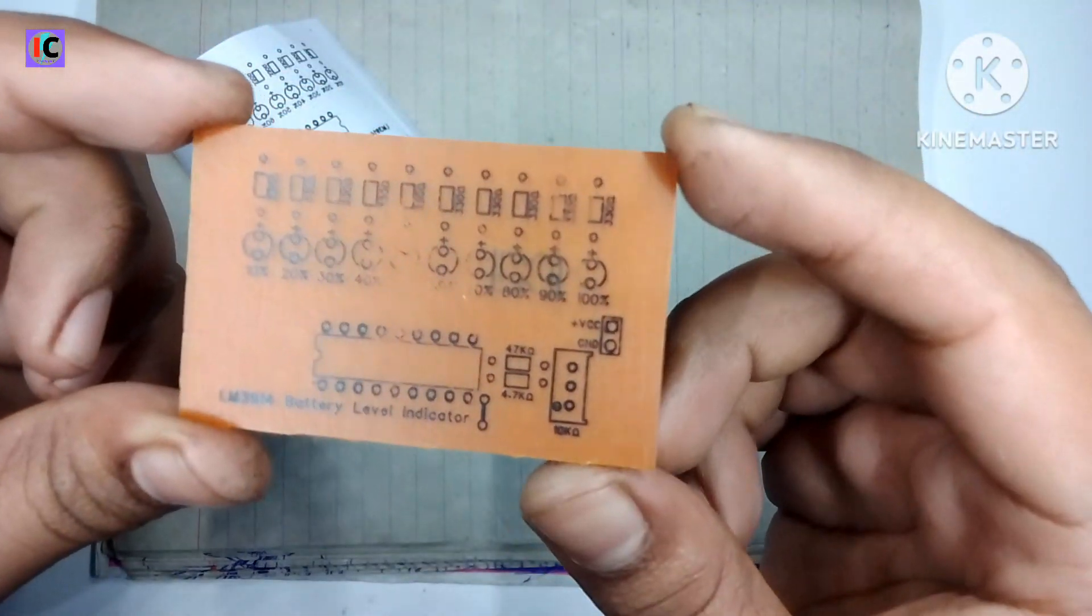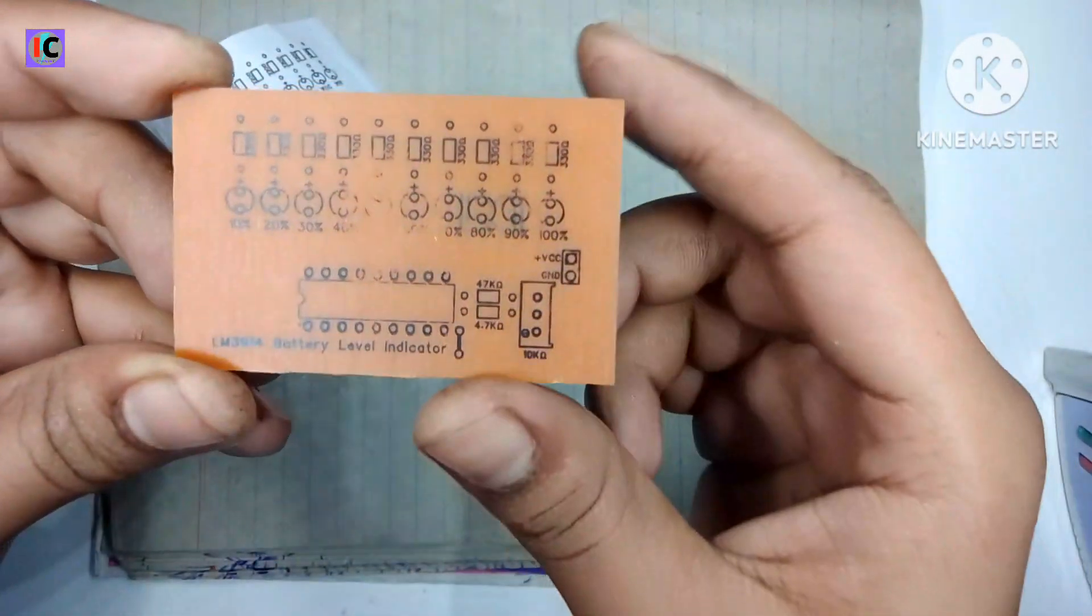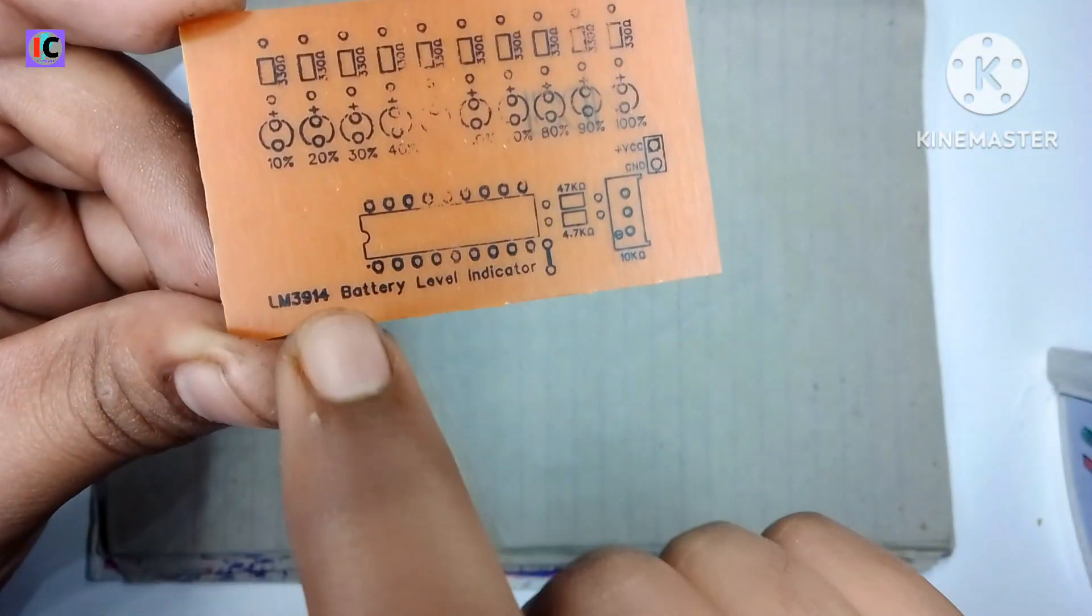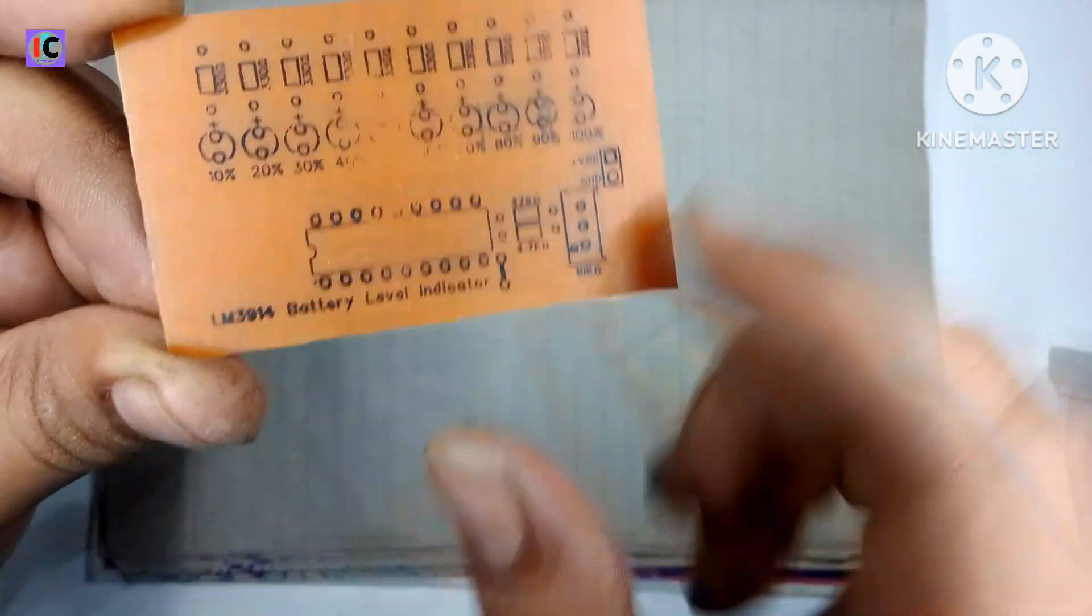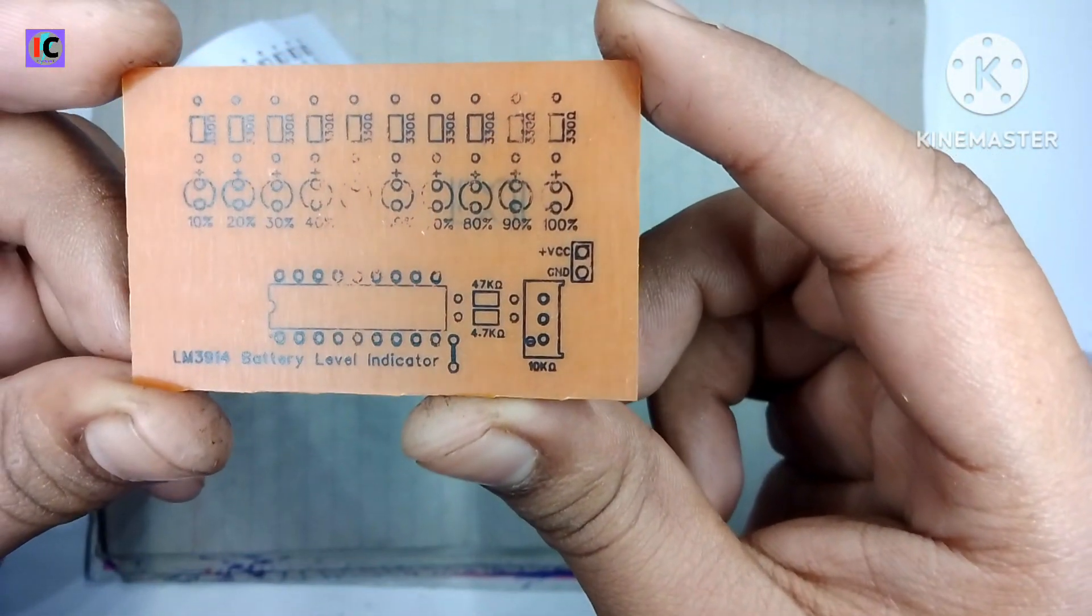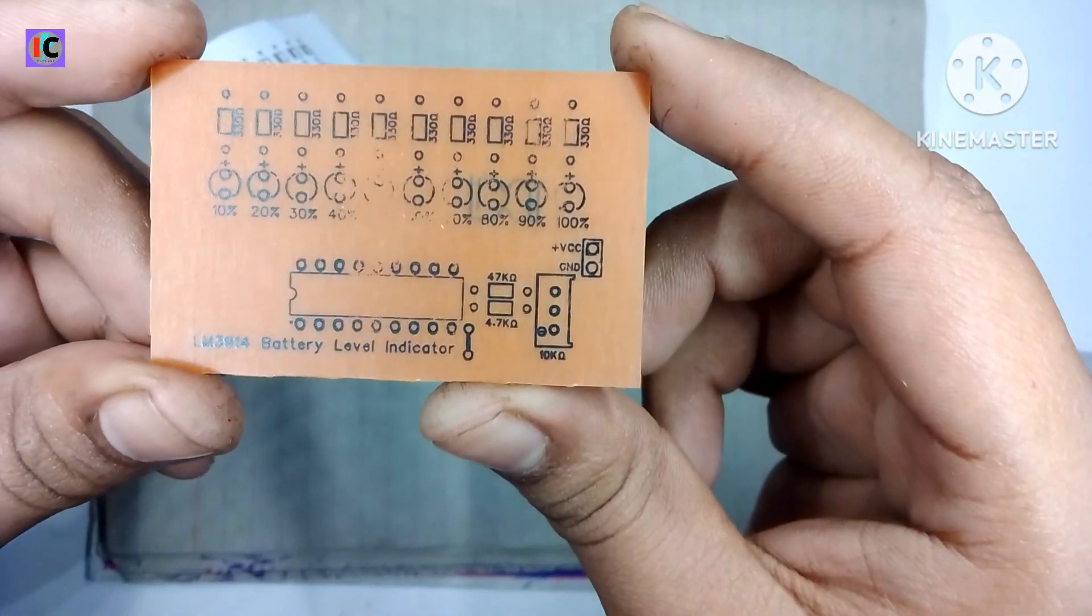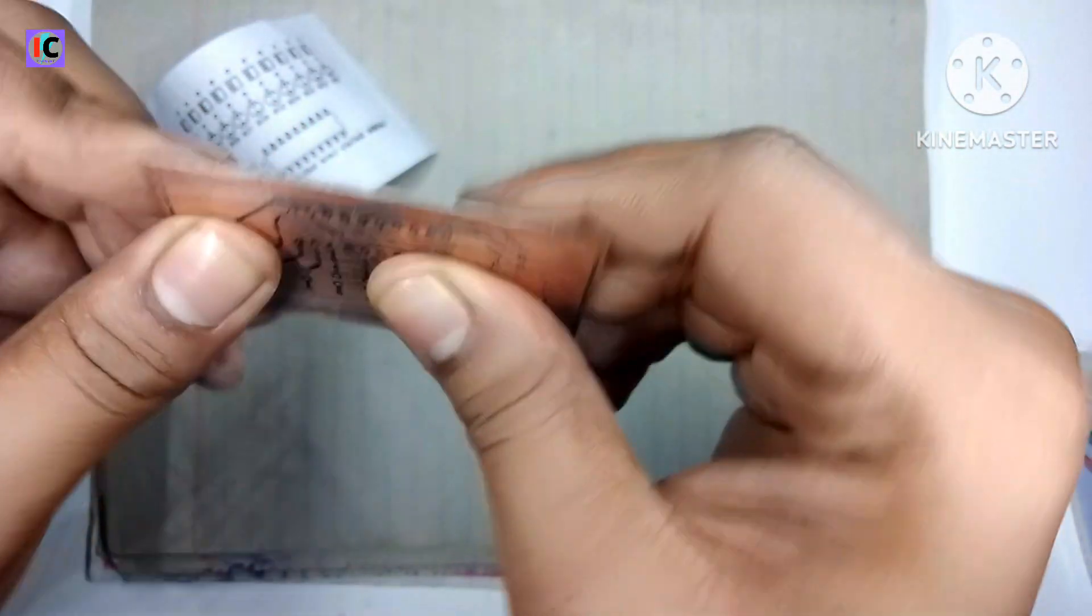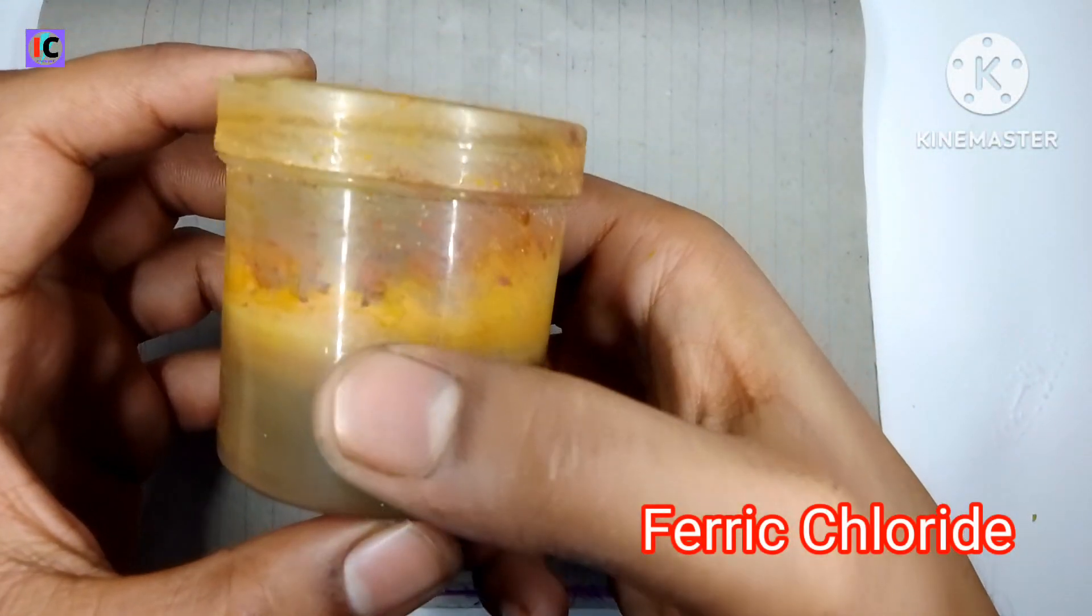As you can see, the mask of the top layer is printed on the PCB very well, but in the middle it's a little bit dim, so replace the iron again for 10 to 15 seconds.